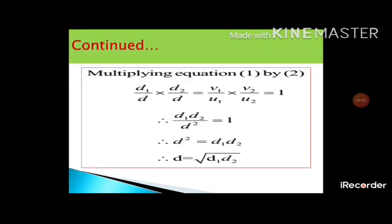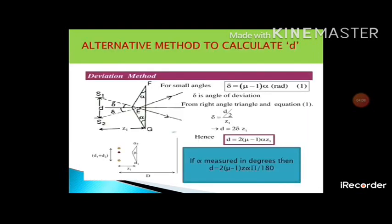By multiplying the two equations, d comes out to be equal to the square root of d1 times d2. Having obtained the values of beta, small d, and capital D, we can substitute all these values in the formula for beta to find the value of lambda.